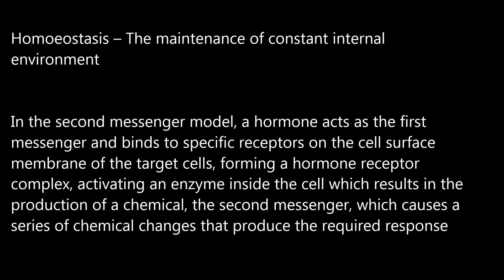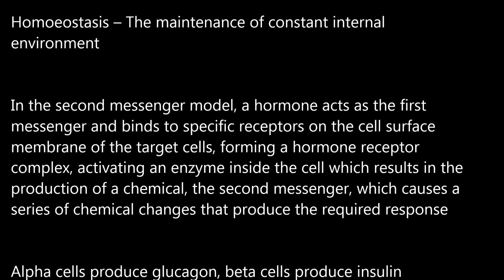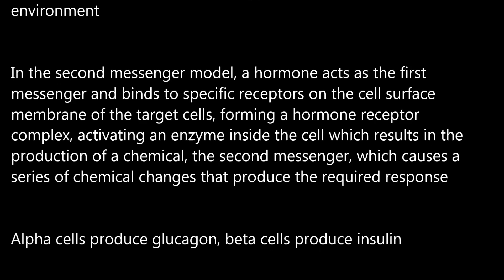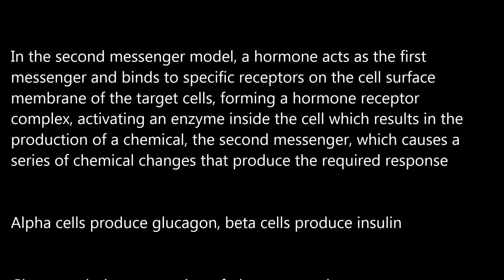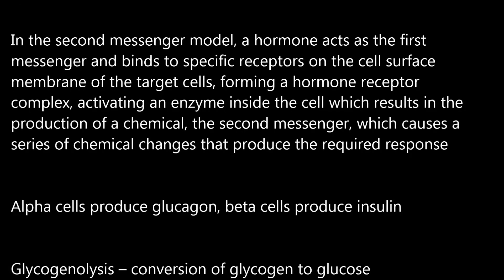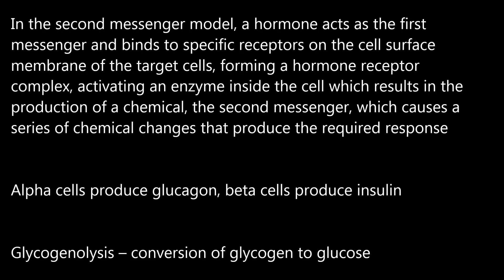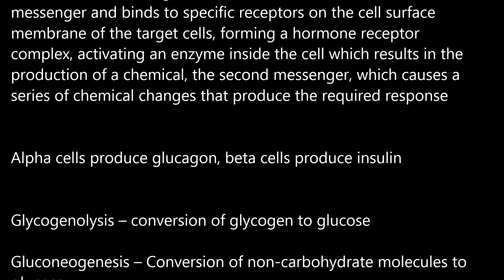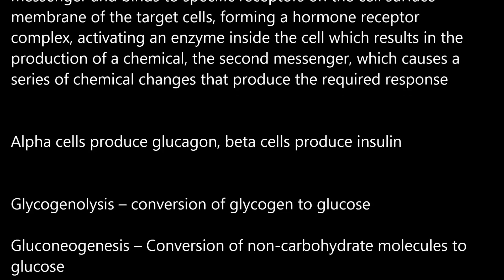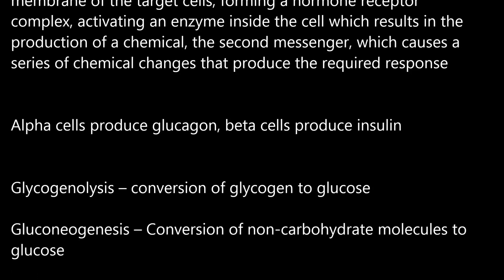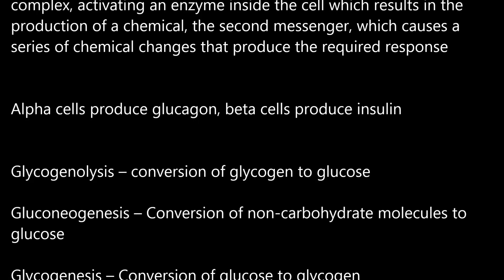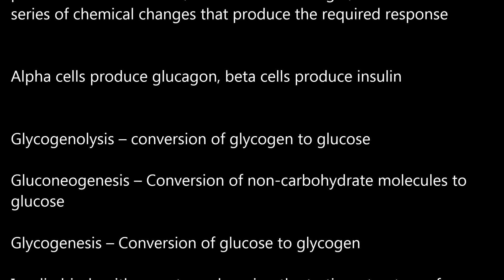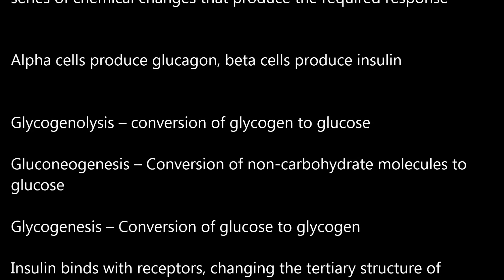Homeostasis: the maintenance of a constant internal environment. In the second messenger model, a hormone acts as the first messenger and binds to specific receptors on the cell surface membrane of the target cells, forming a hormone-receptor complex, activating an enzyme inside the cell which results in the production of a chemical — the second messenger — which causes a series of chemical changes that produce the required response. Alpha cells produce glucagon; beta cells produce insulin.